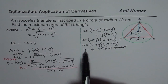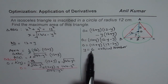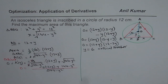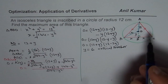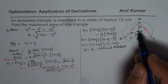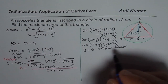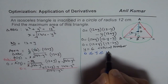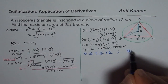So the critical number is Y equals 6. We need to show that for Y equals 6, the area is indeed maximum. Y could range from 0 to 12 because it is within the circle. So the boundary condition is Y is between 0 and 12, and our critical number is Y equals 6.